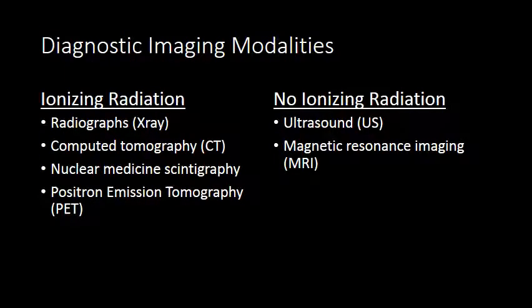When we think about the different basic modalities used in radiology, there are modalities that require ionizing radiation and modalities that don't. X-rays, CTs, nuclear medicine studies, and PET all have ionizing radiation to varying degrees depending on the study. Ultrasound and MRI do not require ionizing radiation and are therefore felt to be safer and are preferred modalities when imaging pregnant women.